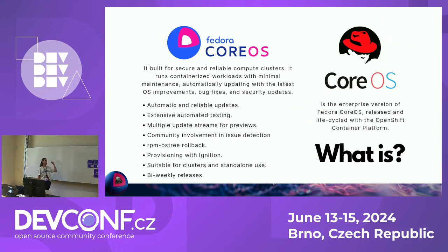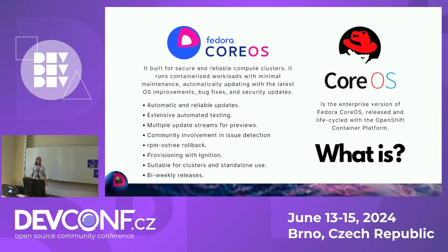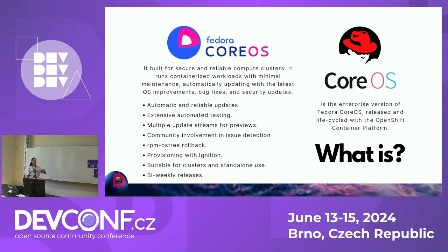What distinguishes Fedora CoreOS from RHCOS? RHCOS is the enterprise version of Fedora CoreOS. It cannot be used standalone — RHCOS is a component of OpenShift; you can only use it via OpenShift. As part of OpenShift, it follows the OpenShift release cycle. It also uses RHEL packages, whereas Fedora CoreOS uses Fedora packages.